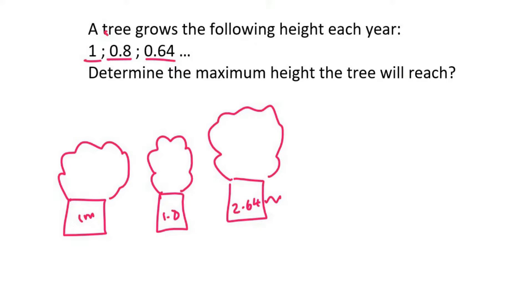It says now, or it says that we need to determine the maximum height that the tree will reach. But we don't know how long the tree is going to be growing for. Is it 10 years, 100 years, 2,000 years? Guess what? It doesn't matter.